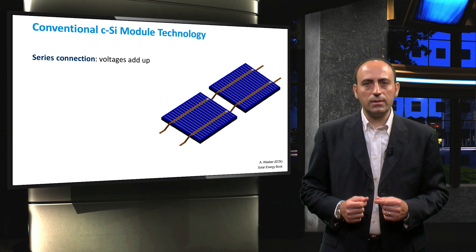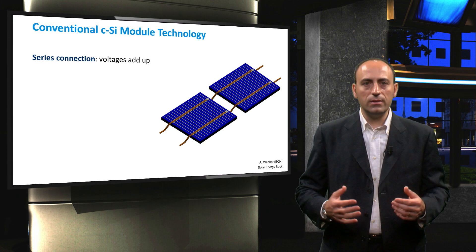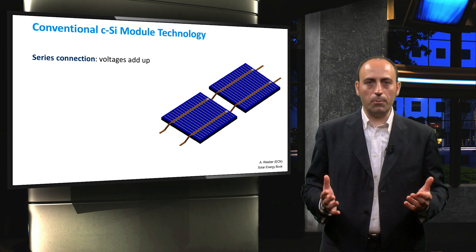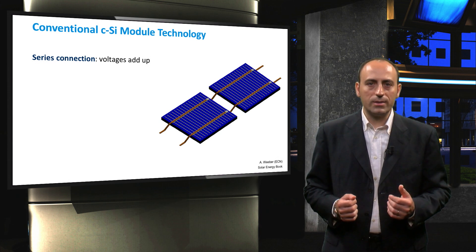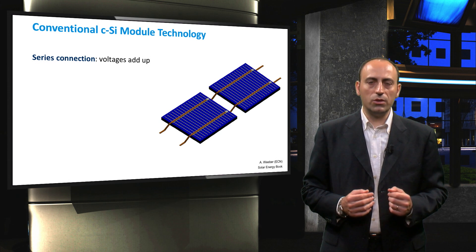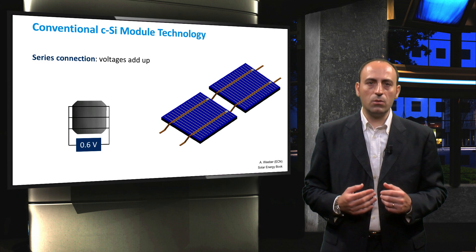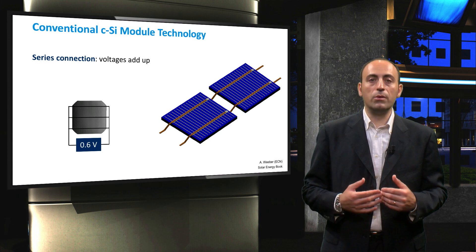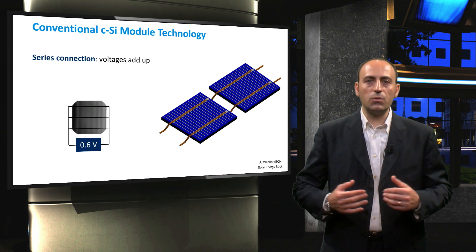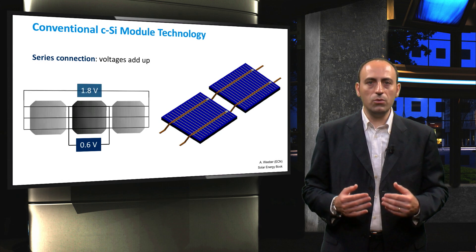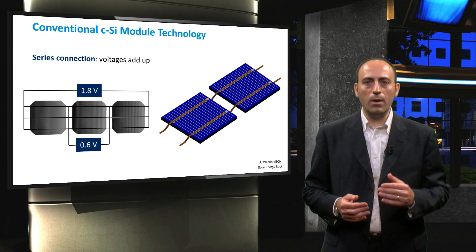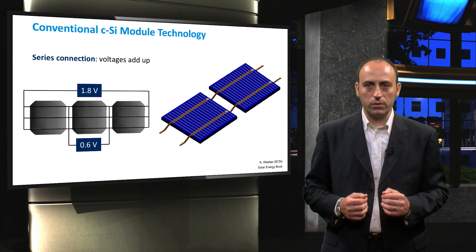Solar cells can be connected in series, and consequently the voltages add up. For example, if the open circuit voltage of one cell is equal to 0.6 volts, then a string of three identical cells will produce an open circuit voltage of 1.8 volts.